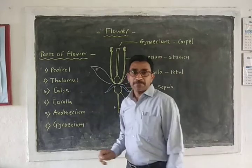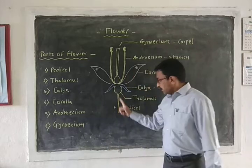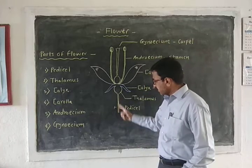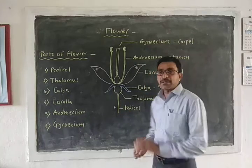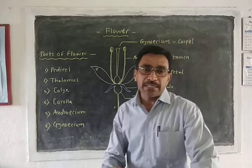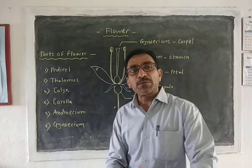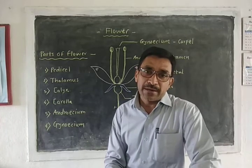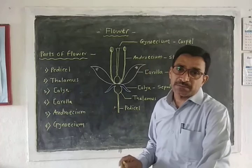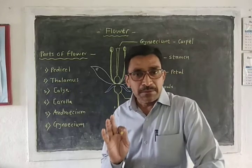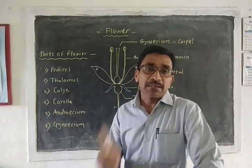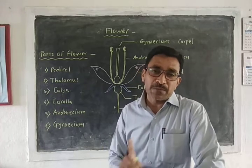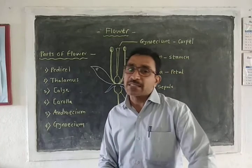The first part is the pedicel. The stalk of the flower is called the pedicel. The length of the pedicel is variable from plant to plant and species to species. A flower with a pedicel is called a pedicellate flower, while a flower without a pedicel is called a sessile flower.